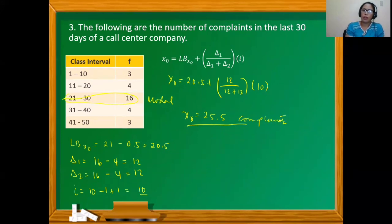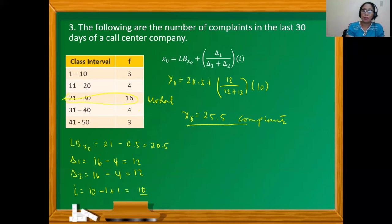Note that 25.5 is within the third class interval, which has the highest frequency. I hope you were able to understand how to calculate the mode of grouped data. That's it for now.